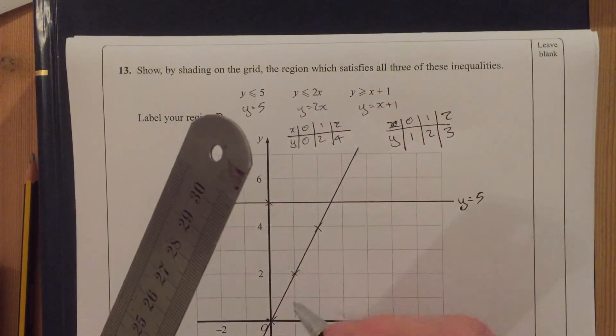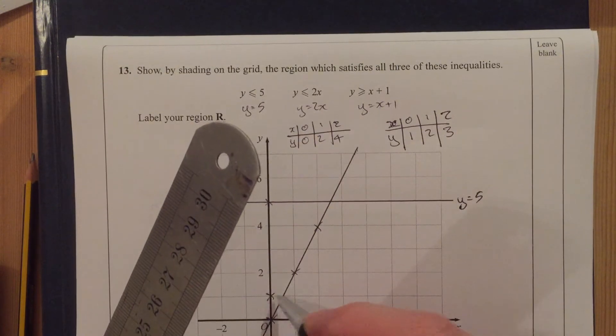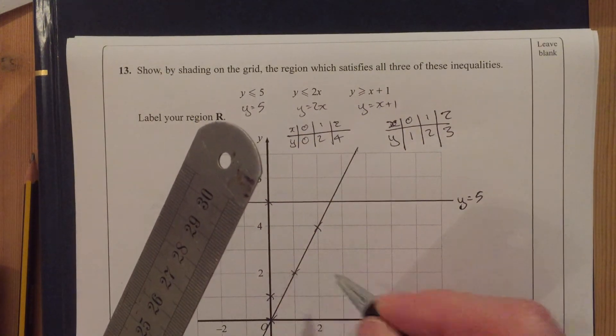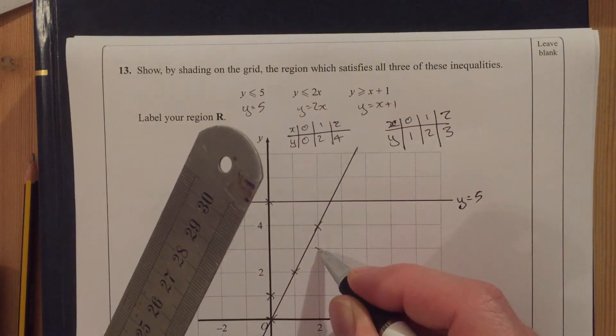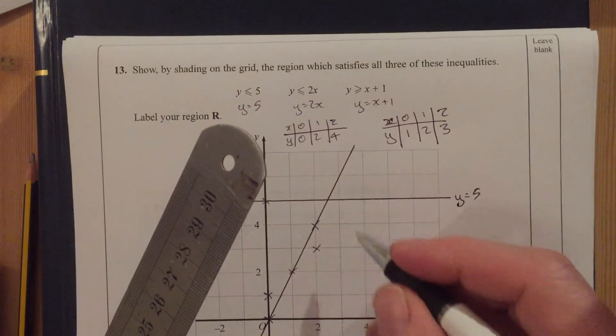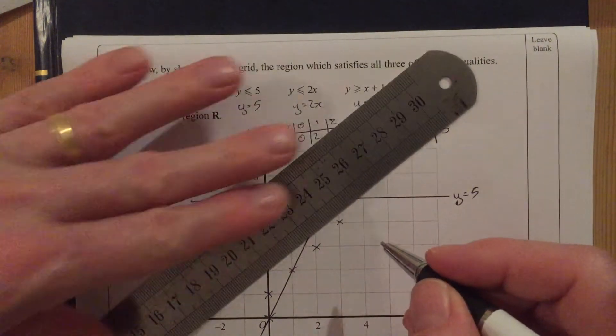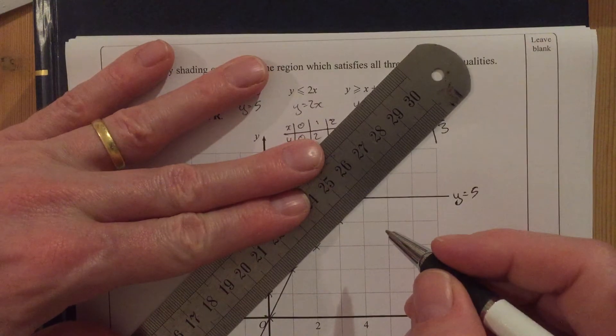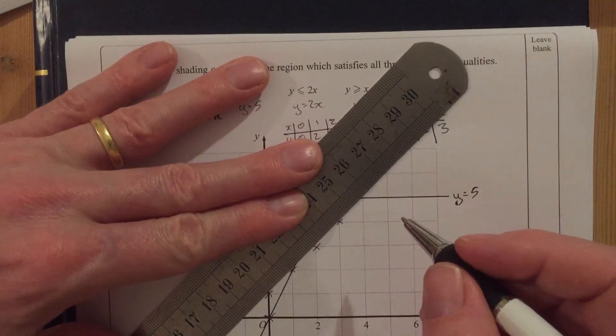OK. 0, 1. 1, 2. 2, 3. 3, 4. There we go. So I can see that that's going to be my line through there.